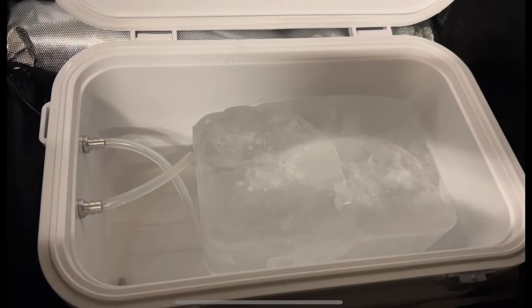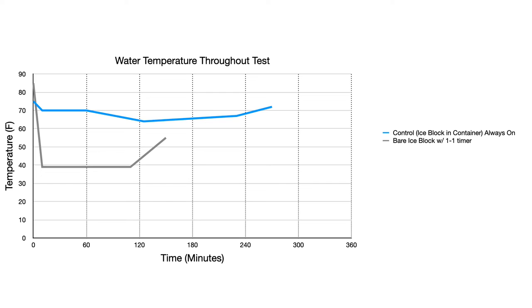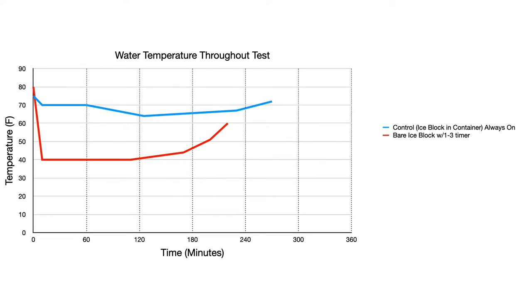From here I moved into testing with the bare ice block. To run these next two tests, I filled the container with water, froze it, and then removed the ice block so that I was placing the bare ice block directly into the water instead of an ice-filled container. The first ice block test was with the timer again set to cycle the pump for one minute on and one minute off. Placing the ice directly in the water yields a huge temperature drop over the control. The water was at 39 degrees for almost two hours. The ice was fully melted by two and a half hours, and the water temp rose to 55 degrees.